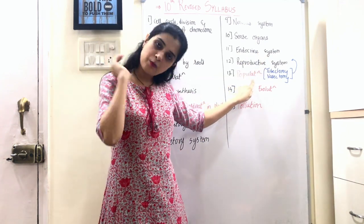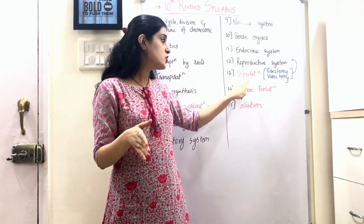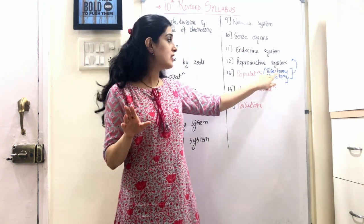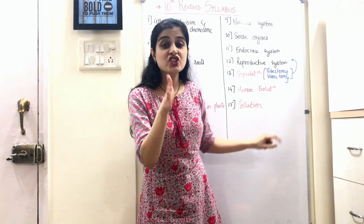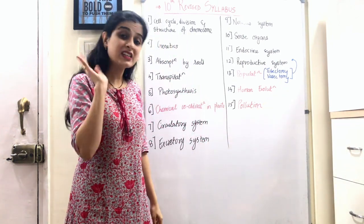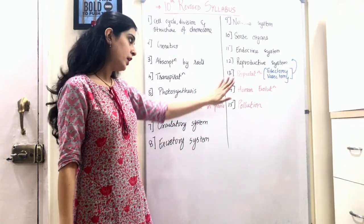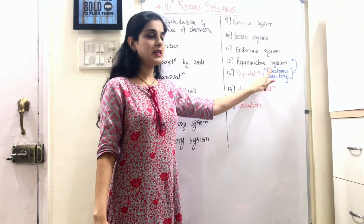From the Population chapter, some content has been moved into the Reproductive System, so the Population chapter is now very small. Most of that chapter was cancelled. Tubectomy, vasectomy, and surgical methods of contraception are still there and will be covered under Reproductive System.